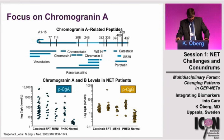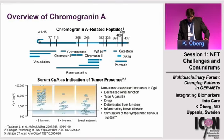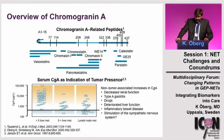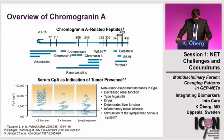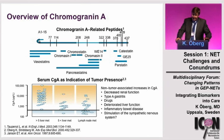Chromogranin A and B can be found increased in all different subtypes of neuroendocrine tumors compared to healthy controls. There is also a correlation with tumor mass — the larger the tumor mass, the higher the circulating levels. It is important to realize that during treatment with somatostatin analogs, the correlation between tumor mass and circulating chromogranin A levels may not hold, because what somatostatin analogs do is block the release of the peptide without necessarily decreasing the size of the tumor.